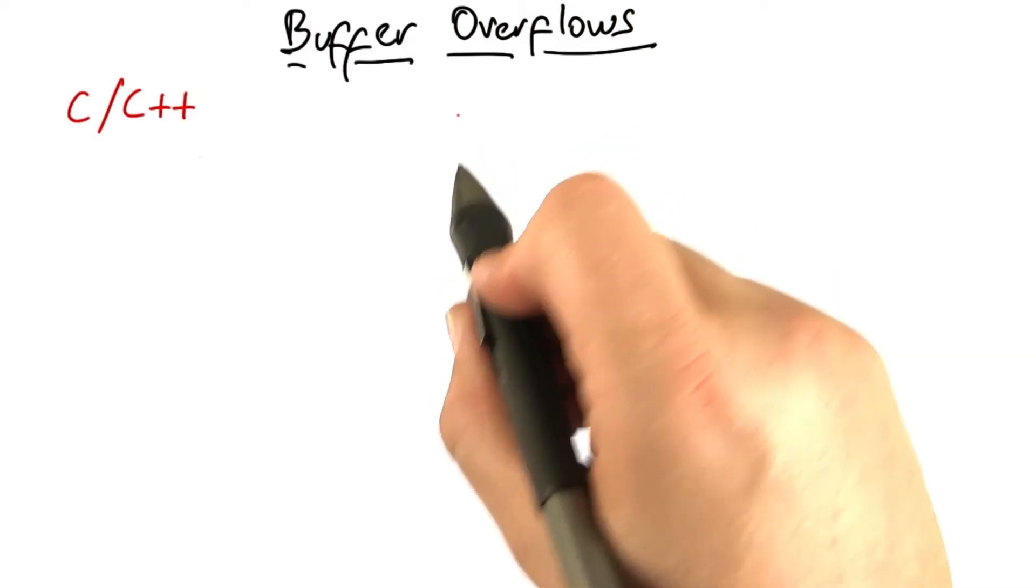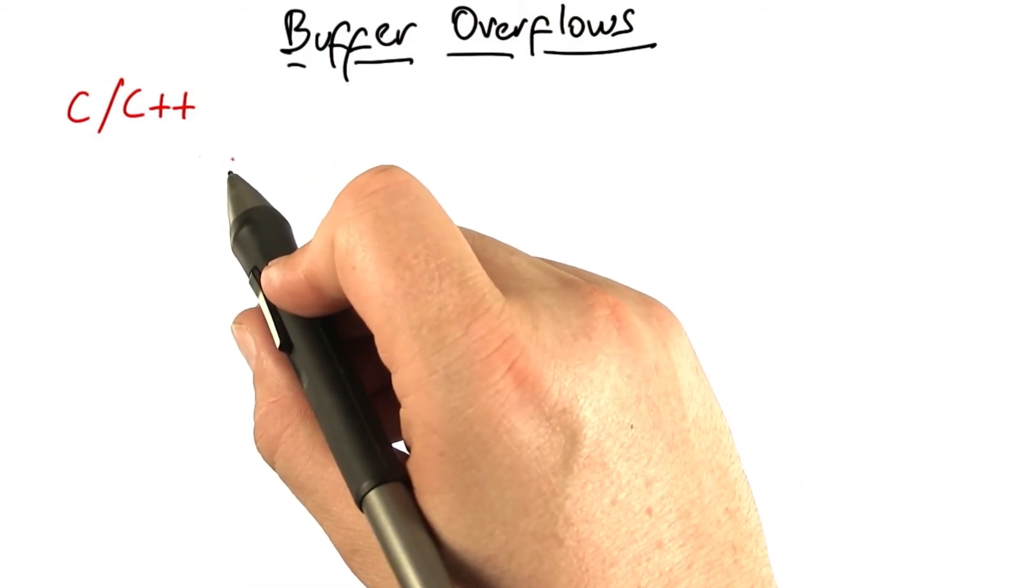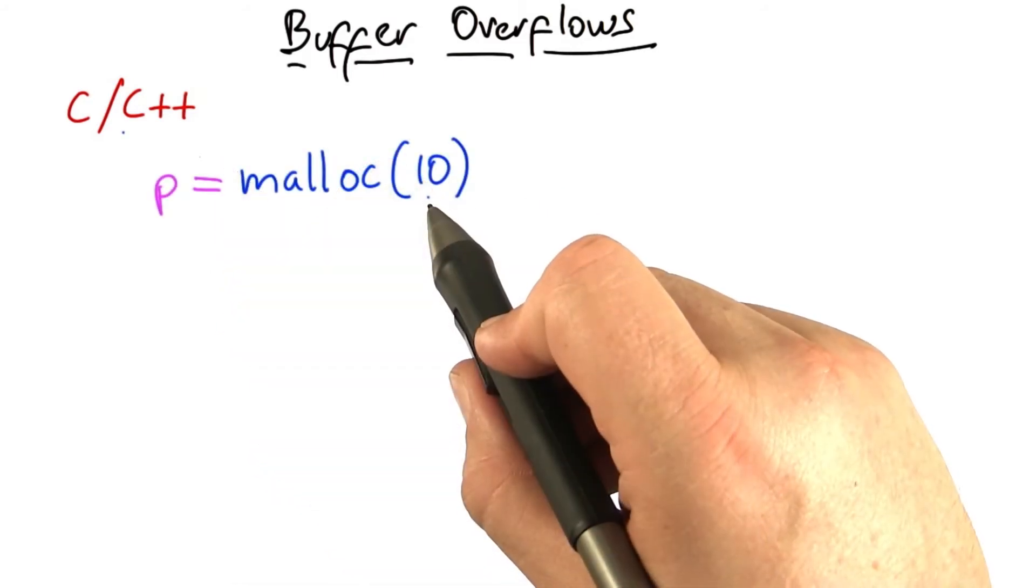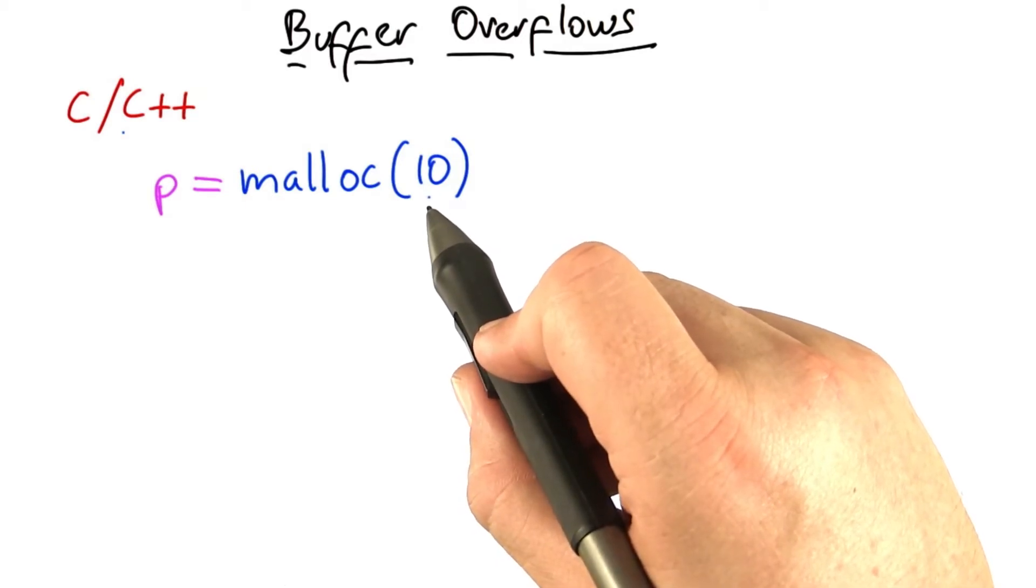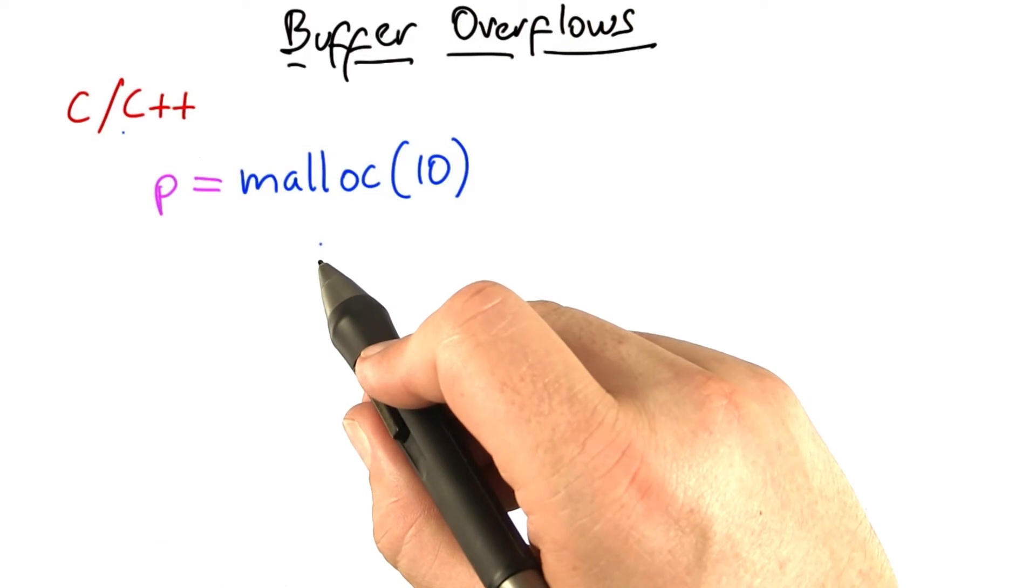Let me show you a short piece of C code that can cause lots of trouble. In C and also C++, you obtain memory by calling a special function called malloc for memory allocator. When you invoke malloc, you give as an argument the number of bytes that you'd like to have for your data structure.